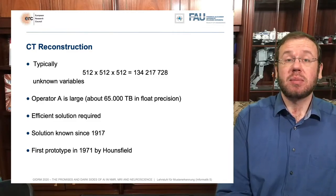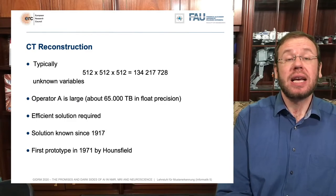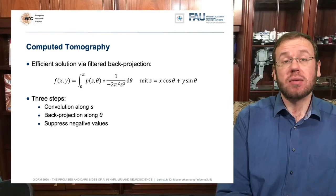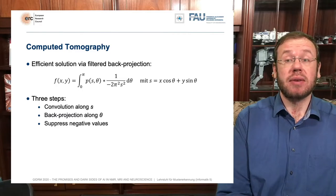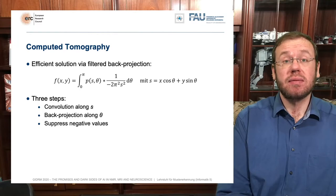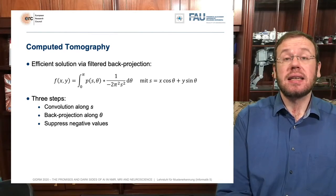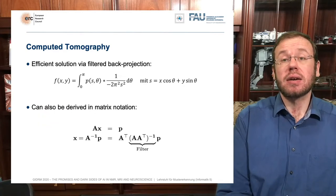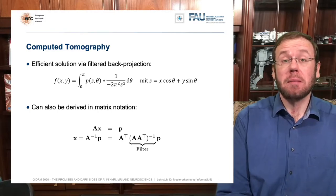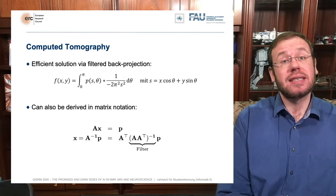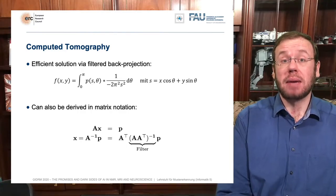The solution is the filtered back projection algorithm — a view-by-view filtering and sum over all angles, implemented very efficiently using ray casting methods, allowing A and A-transpose to be computed efficiently. The Radon solution can be expressed as A-transpose times an inverted matrix. The inversion of that particular matrix gives a circulant matrix, which is nothing else than a convolution. This is our filtered back projection algorithm.